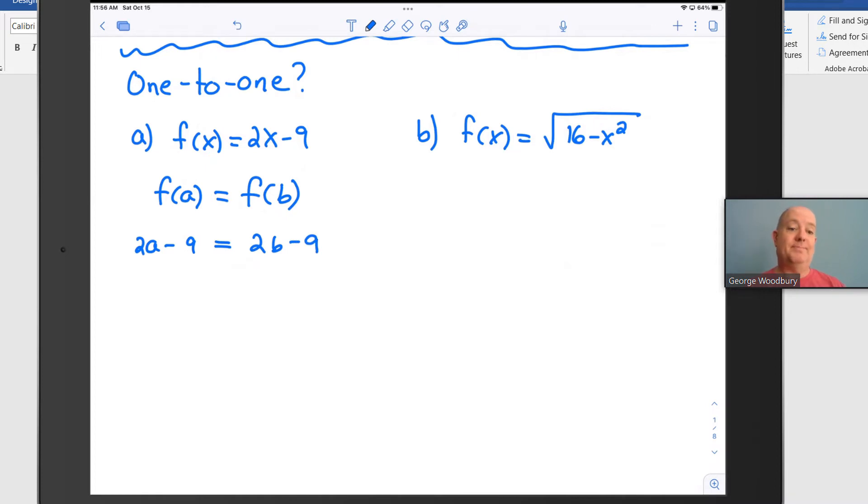Now, we want to try to manipulate both sides of this equation. If we end up with a has to be equal to b, then we know that it is one-to-one. We started with two function values that were the same, and the only way they could be the same is if the input values were the same.